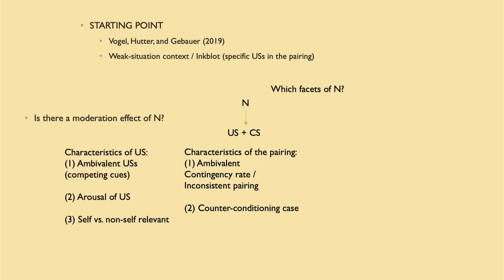If you look at the facets, you can also look at the unconditional stimulus. One is the ambivalent US — which means in general, all studies conducted in evaluative conditioning use either positive or negative stimuli. But we saw a study in which they used a created image that contained both positive and negative aspects. So a kind of competing-cue image where you can look either at the positive side or the negative side of the image.